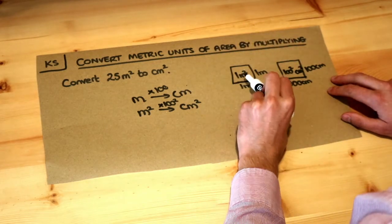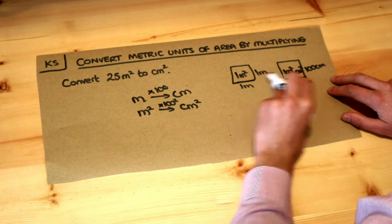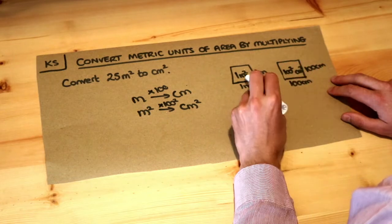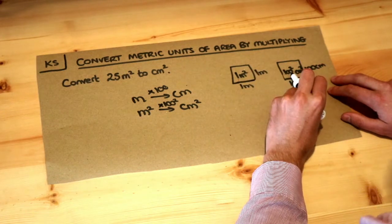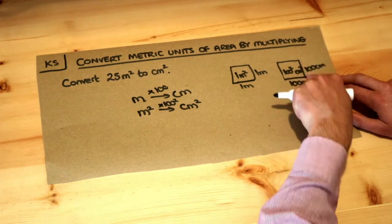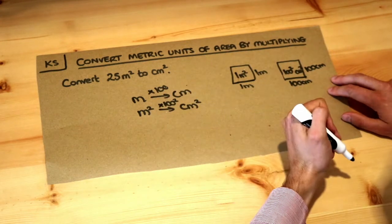So you can see to get from this area to this area, which is the same area, to get from metres squared to centimetres squared, the 1 is becoming 100 squared. We're timesing not by 100 but by 100 squared because each of the width and the height are becoming 100 times bigger.